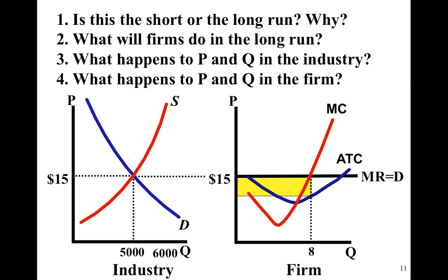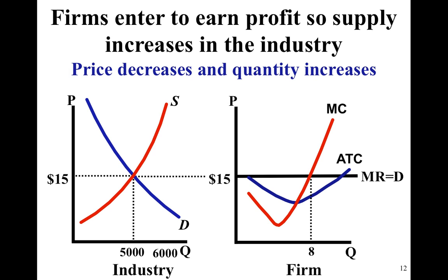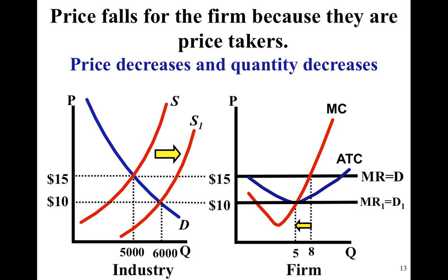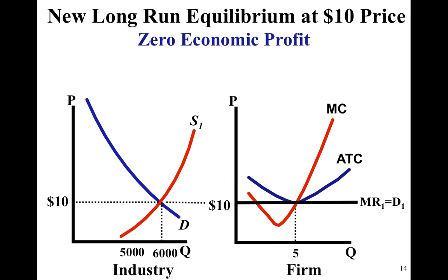In the long run, firms are going to enter this industry. That means price will go down and quantity will rise for the industry. For the firm, price also goes down because the firm's price is set by the industry, and the firm's quantity will fall as we see in the graph. When firms enter because of those profits, price falls to the point where the long-run perfectly competitive equilibrium is achieved — the firm's quantity falls slightly, industry quantity increases, and price decreases for both.